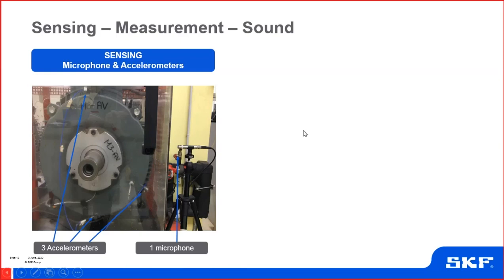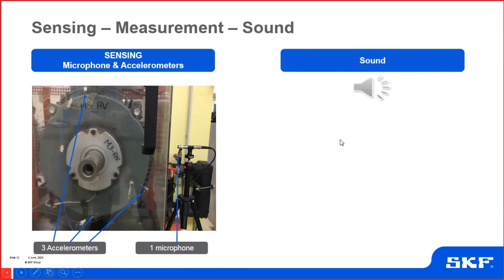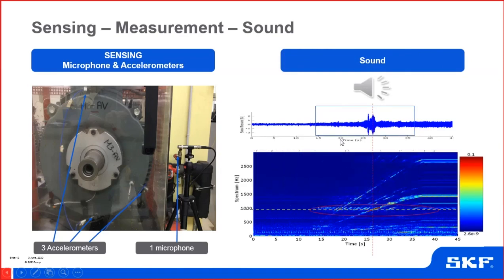We positioned three accelerometers in different axes to measure vibration, and also a microphone. We use both because if the customer complains about noise, we want to reproduce what the customer hears. The microphone measurement guides us on the frequency focus — below 1 kHz, between 1 and 3 kHz, or above 6 kHz. Since the transfer path is completely different for accelerometers versus microphones, combining both sensing is our recommendation.